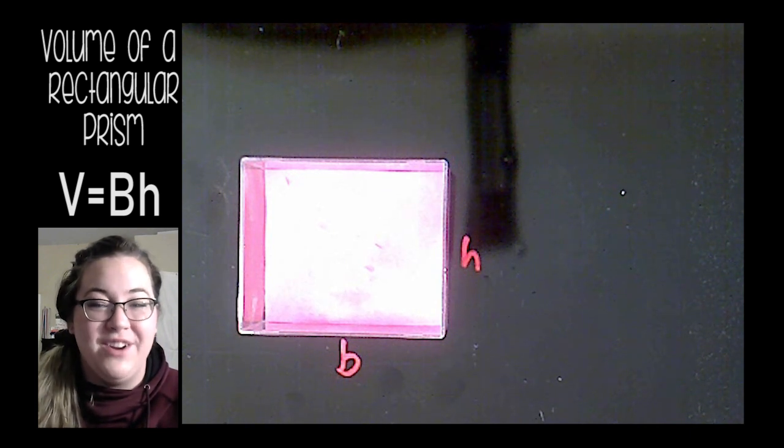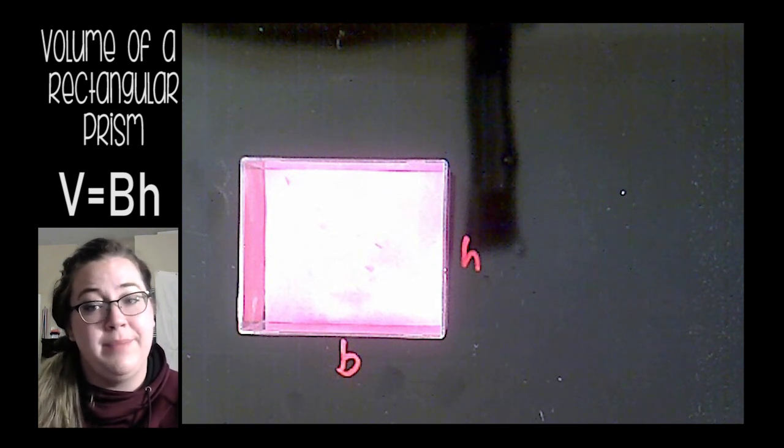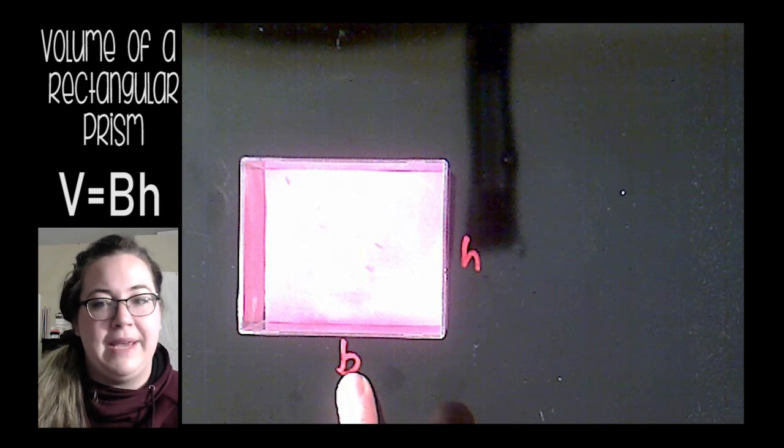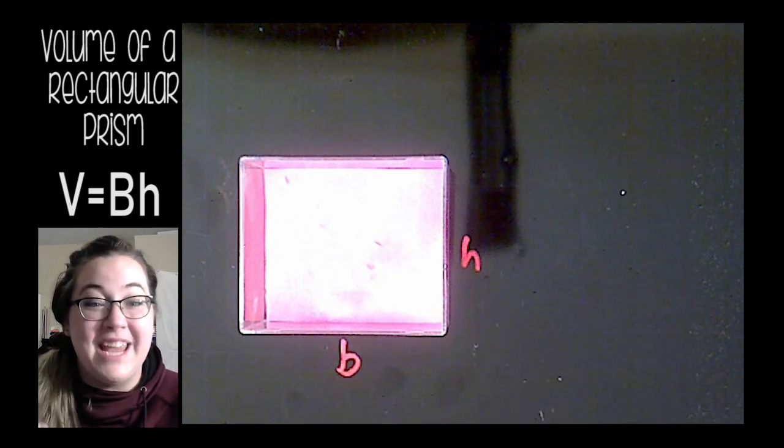So you've learned how to find the area of a rectangle, which is a 2D shape. It's area equals base times height. A rectangular prism is just rectangles stacked on top of each other. I'm going to show it to you.